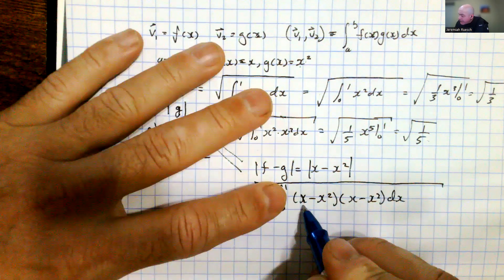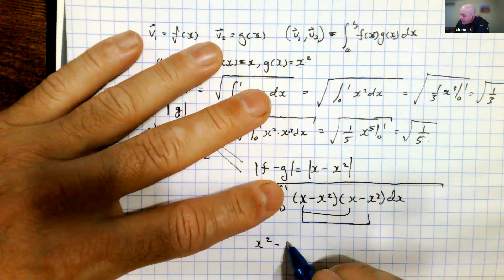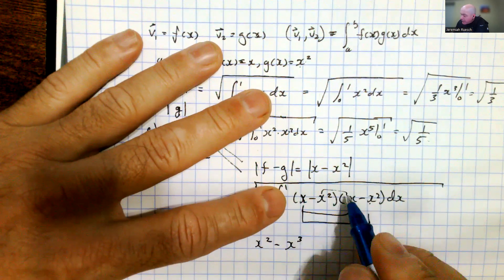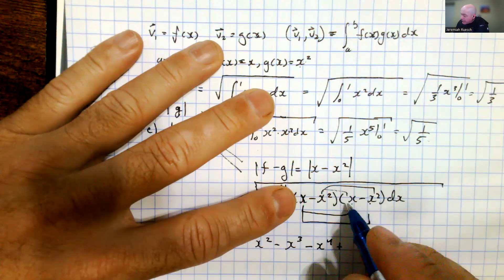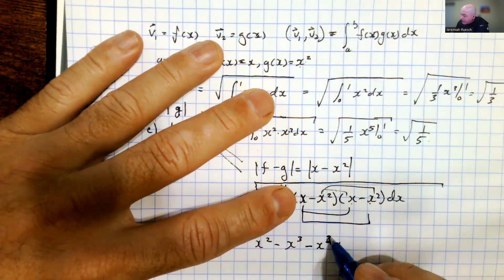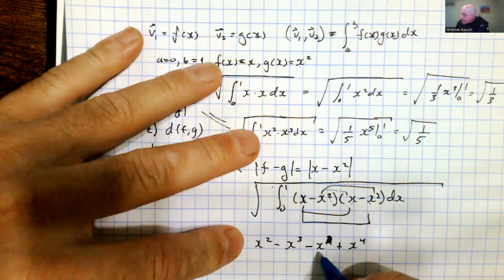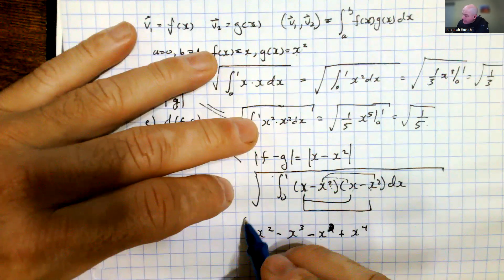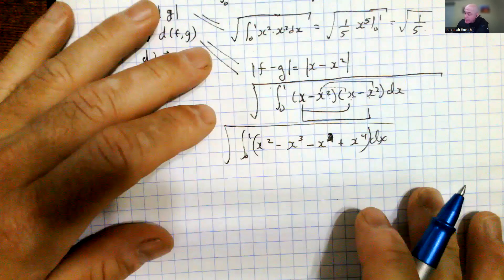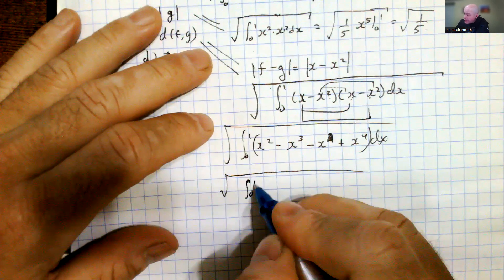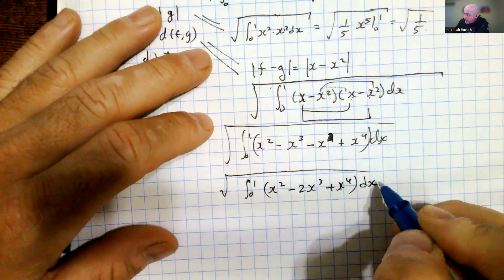Multiplying this out, we get x squared, then minus x cubed from the first term times the second, and then minus x cubed again from the second cross term — I apologize for the correction — and then plus x to the 4th. Combining the like terms, the whole integrand becomes x squared minus 2x cubed plus x to the 4th.